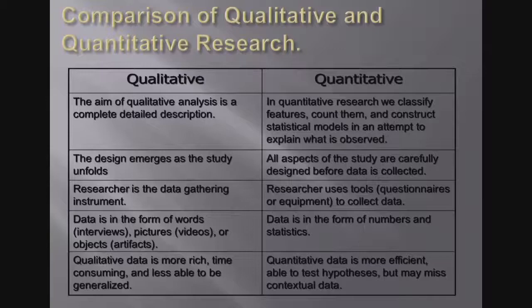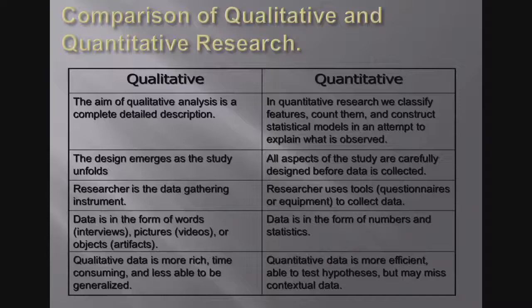You need to be able to compare quantitative and qualitative research. The aim of qualitative analysis is a complete, detailed description. Quantitative research involves collecting information, analyzing it, and representing it numerically — it is applied in science. Qualitative is used more in social science. In your research, you can choose either quantitative or qualitative.